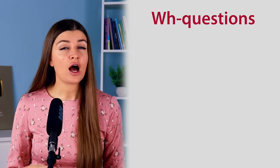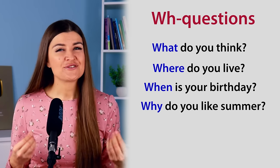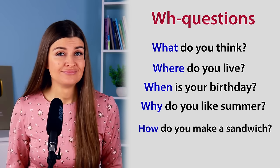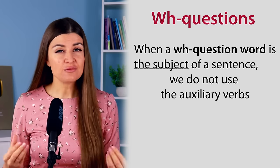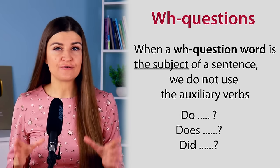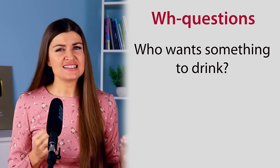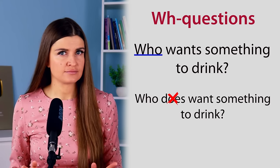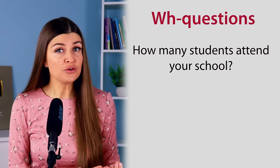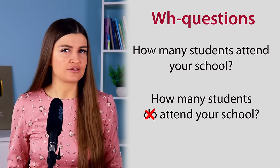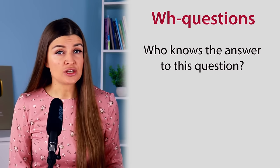Let's take a look at these examples. What — what do you think? Where — where do you live? When — when is your birthday? Why — why do you like summer? How — how do you make a sandwich? But there are some exceptions. When question words like who, what, or which are the subjects of a sentence, we do not use auxiliary verbs like do, does, or did. Who wants something to drink? — who is the subject, not 'who does want'; that's incorrect. Who lives in that house? — not 'who does live'. How many students attend your school? — 'how many students do attend' is not correct. What happened to you last night? — not 'what did happen'. Who knows the answer to this question? — not 'who does know'.